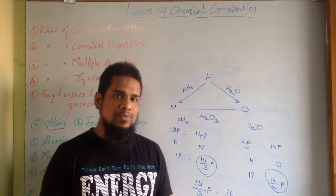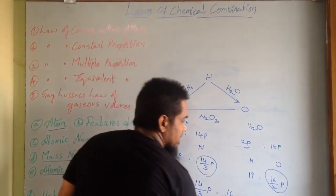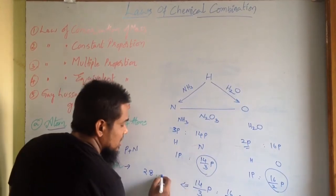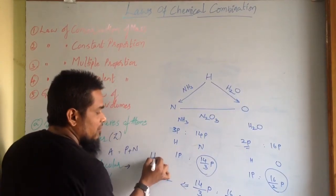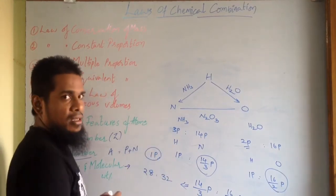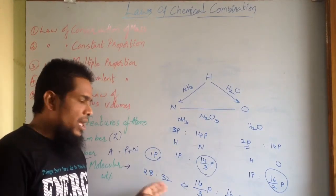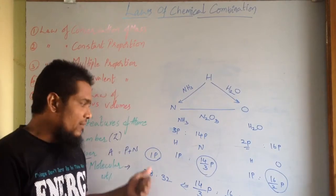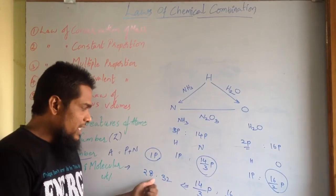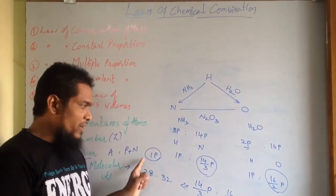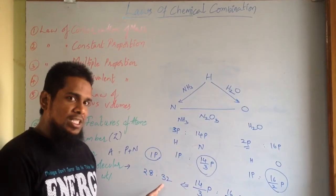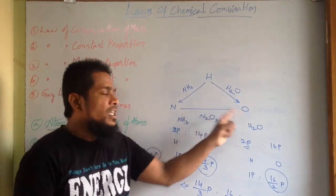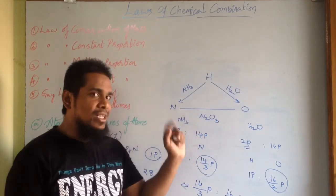If we simplify by cross-multiplying, 14/3 to 16/2 becomes 28 to 32. So with one part of hydrogen, the ratio of nitrogen and oxygen combining is 28 is to 32.